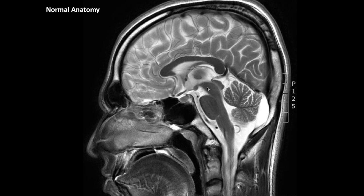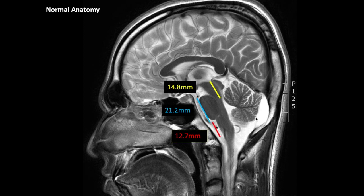The brainstem consists of the midbrain, the pons, and the medulla oblongata. The midbrain develops from the mesencephalon, and the hindbrain from the rhombencephalon, which is divided into the metencephalon and the myelencephalon. From the metencephalon, the pons as well as the cerebellum develop. Developmentally, the midbrain and the medulla should be almost equal in vertical height.